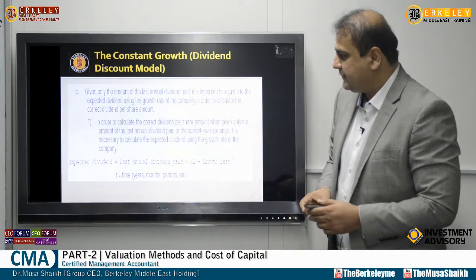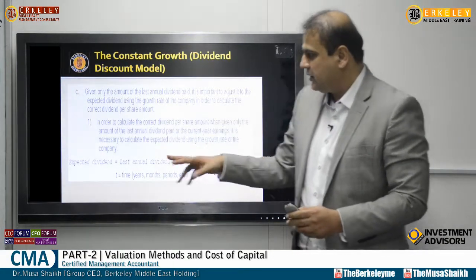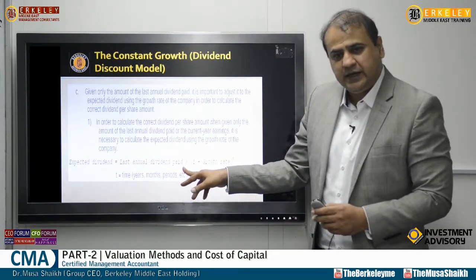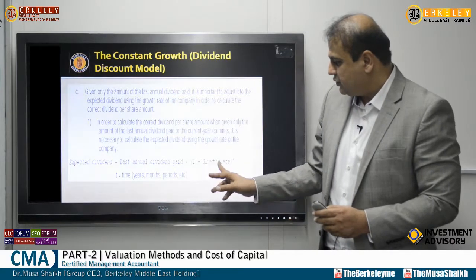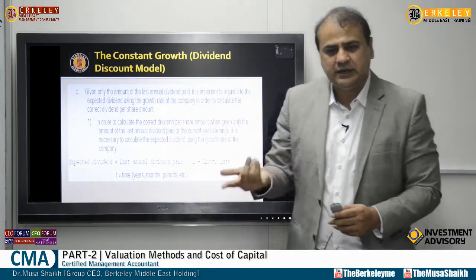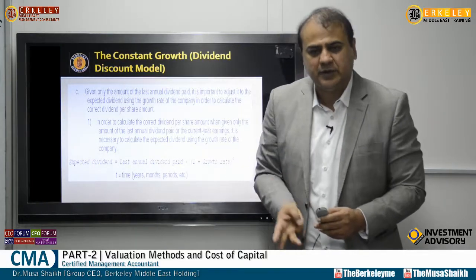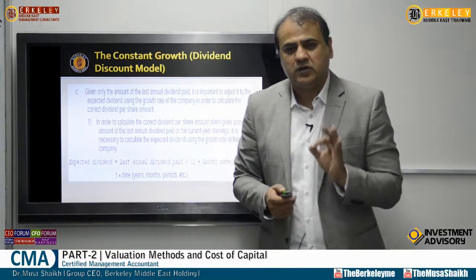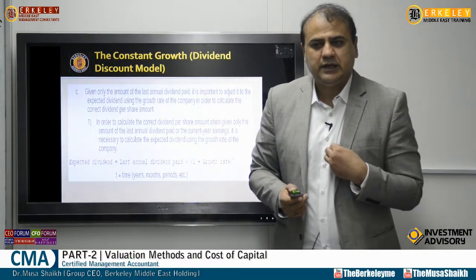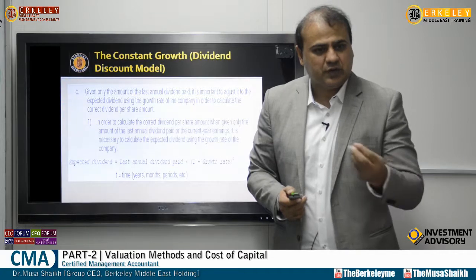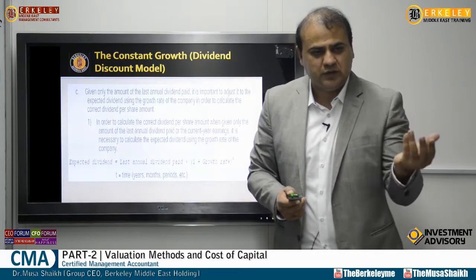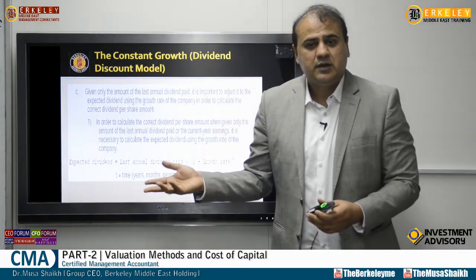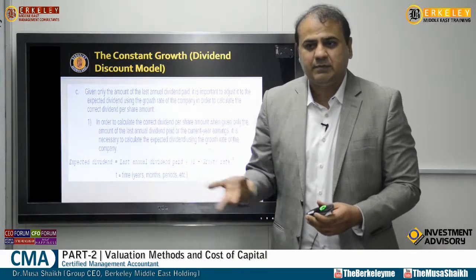There is another formula: expected dividend equals last annual dividend paid multiplied by (1 + growth rate) to the power of t, where t can be a year, month, or quarter based on the time period. This is important for shareholders to know what dividend they will receive, because if the return is not satisfactory, they should move their investment elsewhere to get a better return.